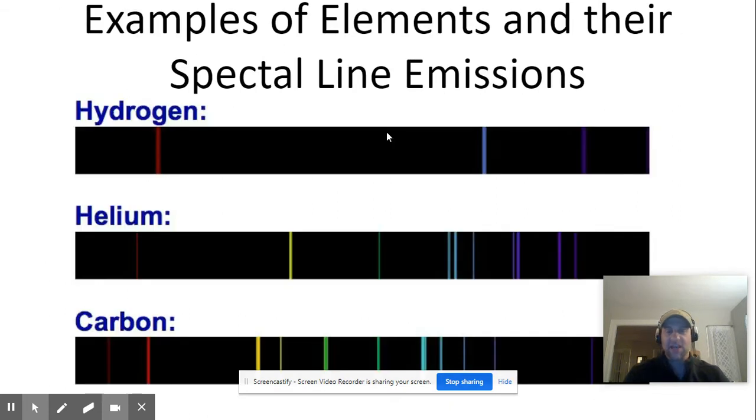So here's some examples of spectral lines from hydrogen, helium, and carbon. You'll notice that they're all different. They have very specific spectral lines based upon their composition.